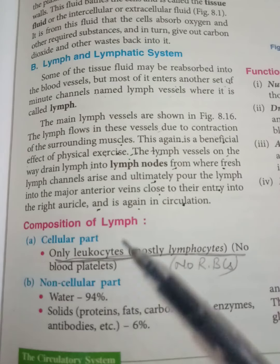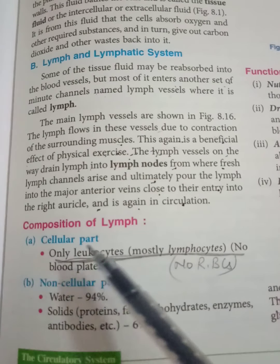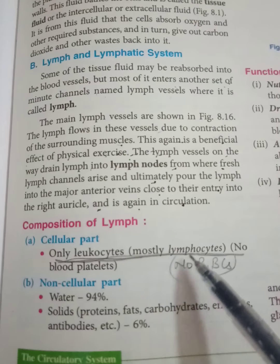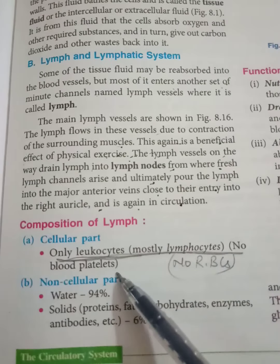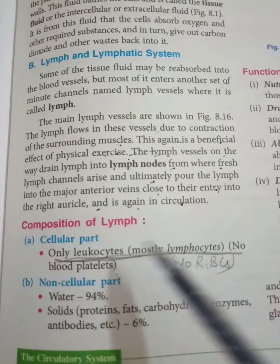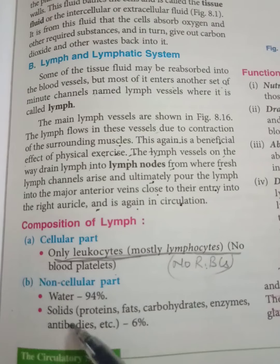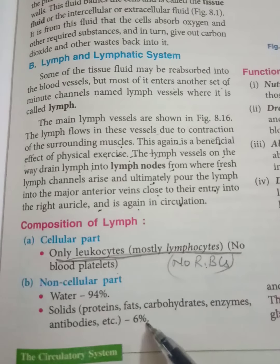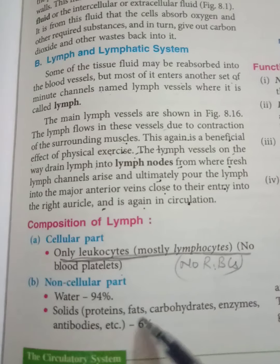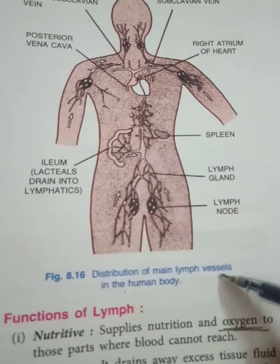Comparing constituents: we have blood, plasma, serum, and now lymph. The cellular part of lymph contains only leukocytes — mostly lymphocytes. There are no blood platelets and no red blood cells in lymph. The non-cellular part is 94% water; the remaining 6% solids are proteins, fats, carbohydrates, enzymes, and antibodies.